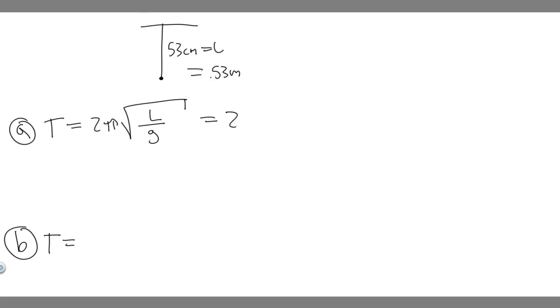So now we've got basically what we need to plug in. So times the square root of 0.53, and then we divide that by the gravity. So the gravity is just 9.8 in this case. That's the gravity on Earth.